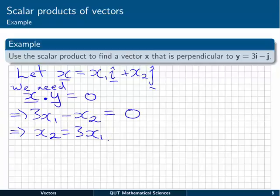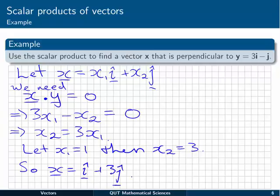Effectively, this is telling us that x1 can be whatever we like, but whatever we pick it to be, x2 must be equal to 3 times that number in order for x and y to be perpendicular vectors. To make things simple, let's just take x1 equal to 1. That means then that x2 will be 3 multiplied by that, or just 3. So the vector x equal to i plus 3j will be perpendicular to y.